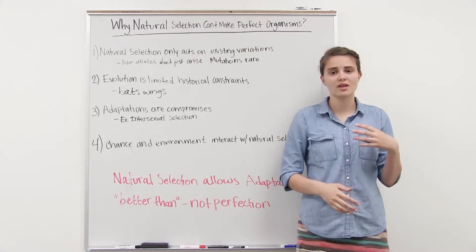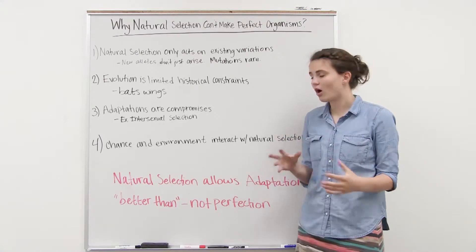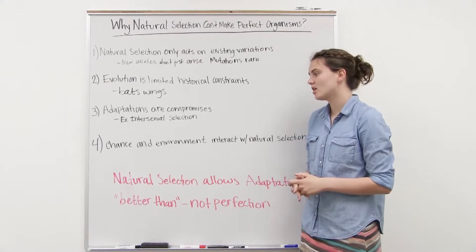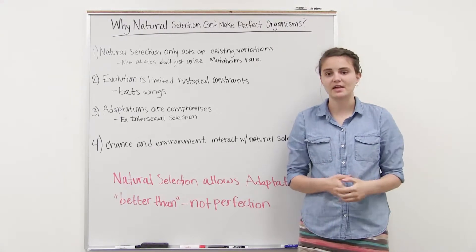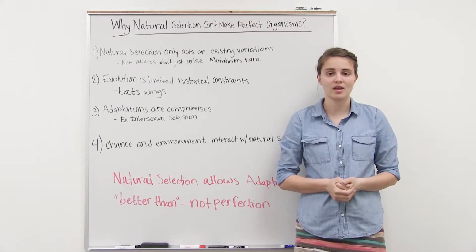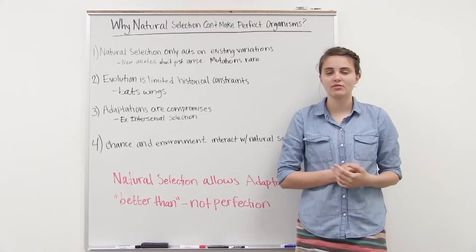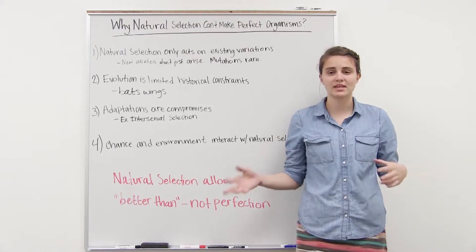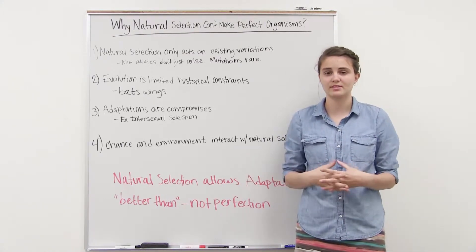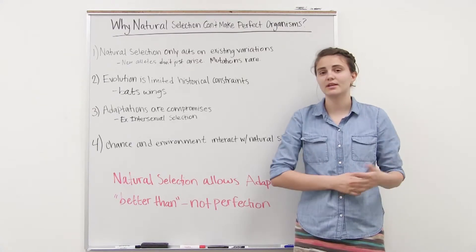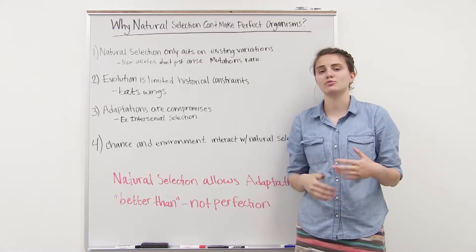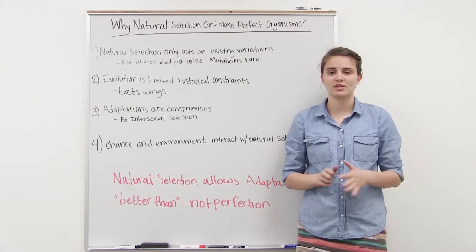And the last one is that chance and the environment are all interacting with natural selection. So we have lots of chance events that will mess with natural selection. Fires or floods or storms can move organisms or destroy organisms. And so now we have a completely different allele or gene pool and we have to rework natural selection with it.